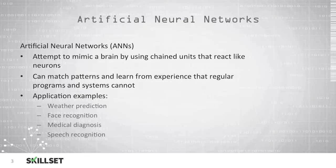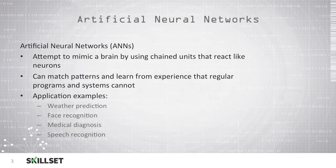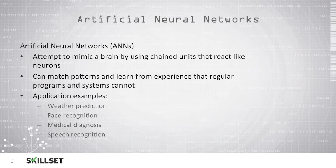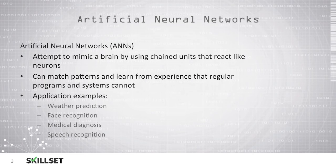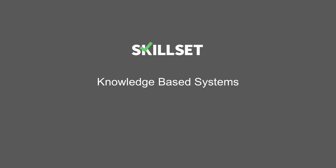Artificial neural networks, or ANNs, will attempt to mimic the human brain using chained units that react like neurons would. Unlike traditional programs and systems, they can match patterns and learn from experience. These can be used for many different types of applications such as facial recognition, speech recognition, diagnosing medical conditions, and predicting the weather. This concludes our knowledge-based systems module.